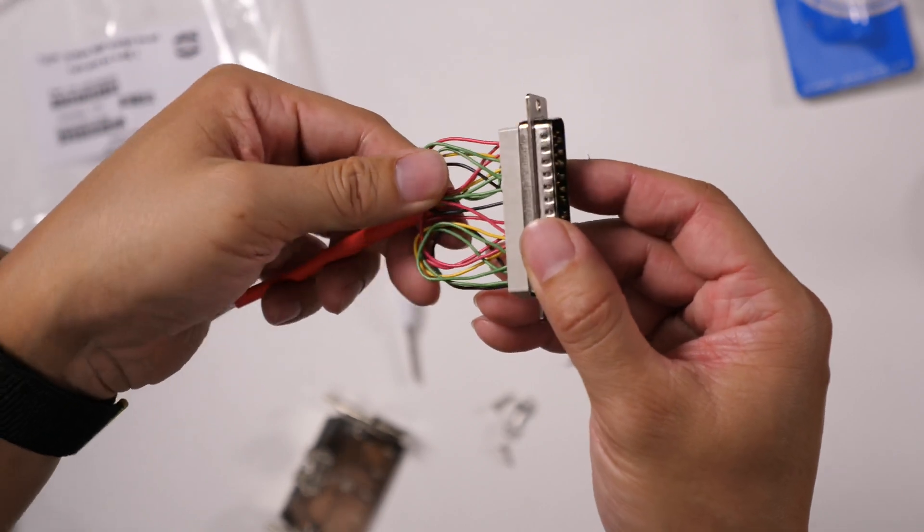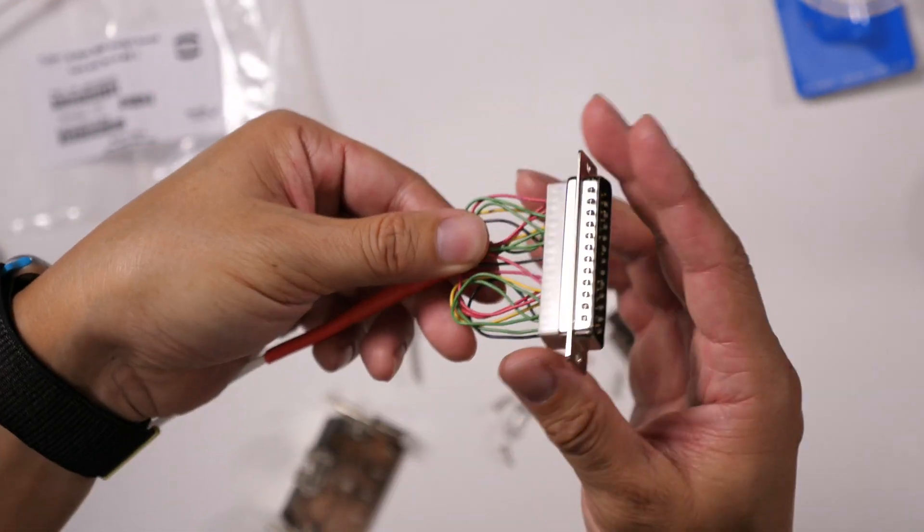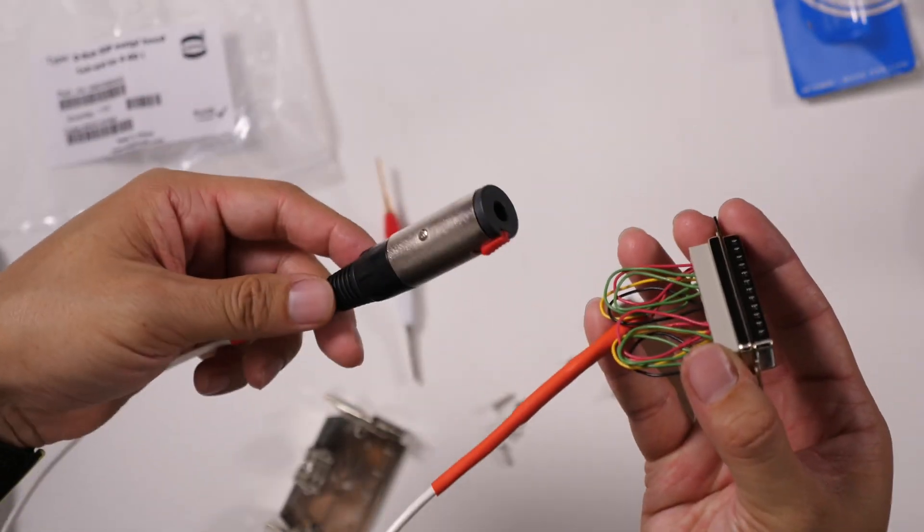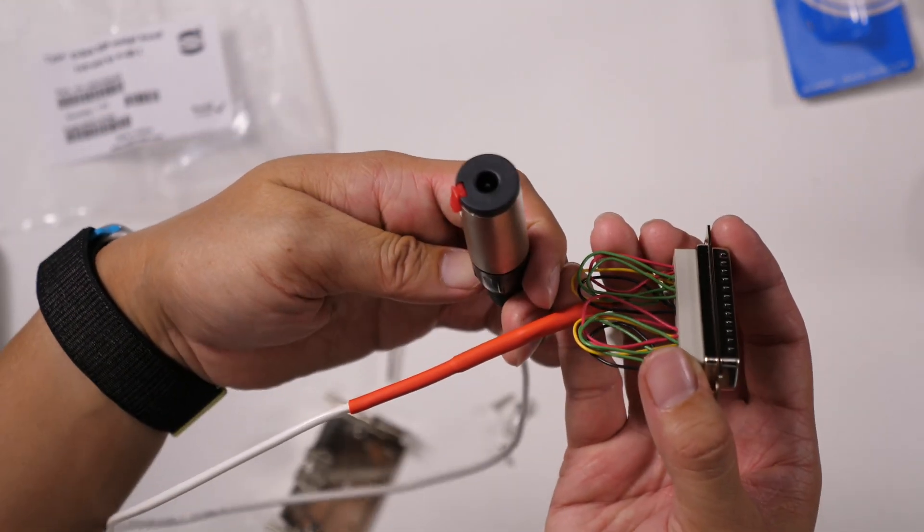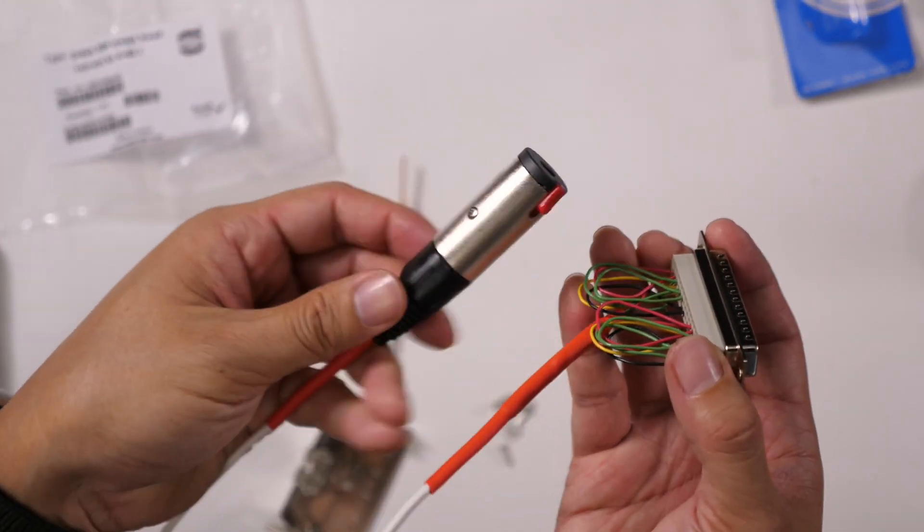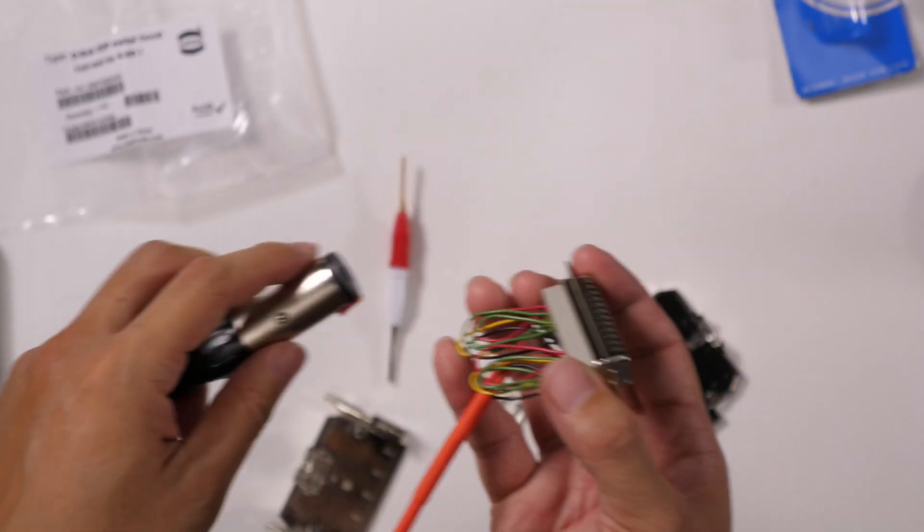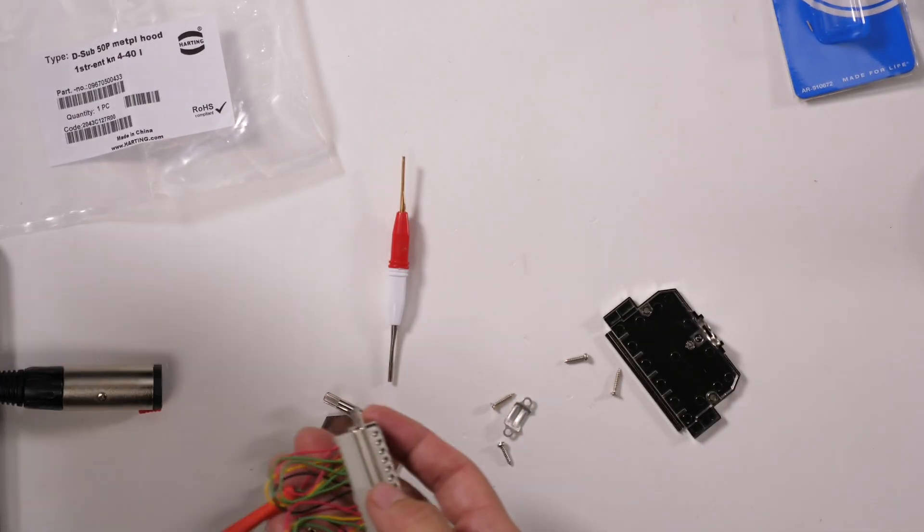This other cable though that you see coming out of it, this is a quarter inch female jack that I soldered together. This will then go to an emergency stop button.